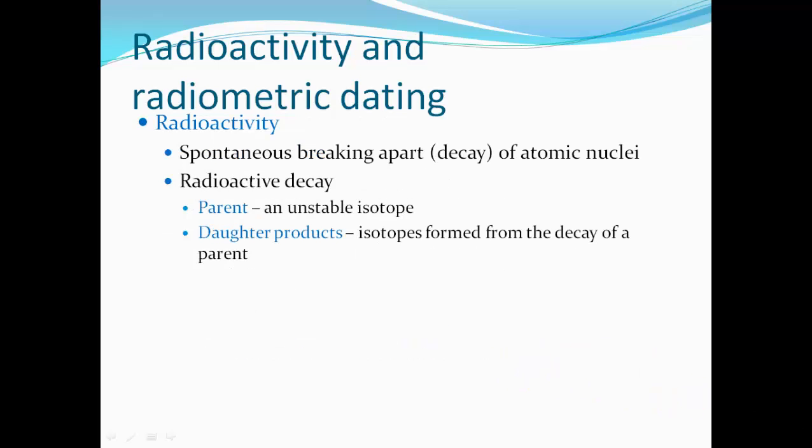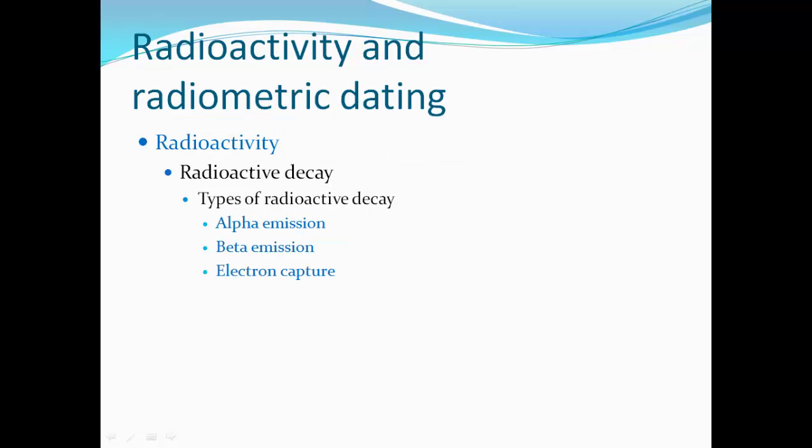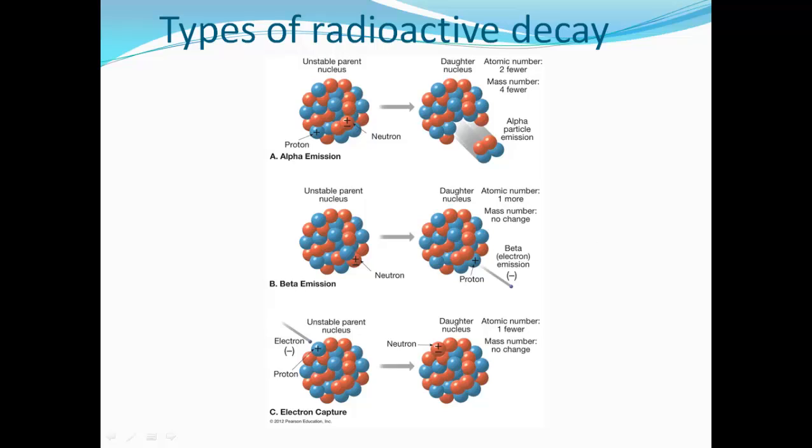Radioactivity is the spontaneous break apart or decay of atomic nuclei. Some isotopes are not stable and they will break apart and decay — that's radioactivity. The parent is an unstable isotope, and the daughter products are the isotopes formed from the decay of a parent. There are several types of decay: alpha emission, beta emission, and electron capture.